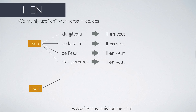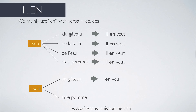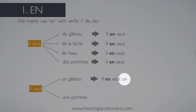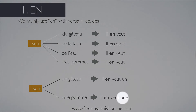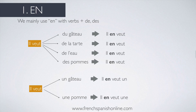It also works with indefinite articles. For example, il veut un gâteau (he wants a cake) or il veut une pomme. The first one becomes il en veut un — you need to add the indefinite article UN at the end because gâteau is masculine. For pomme, which is feminine, it becomes elle en veut une. So when you have some cake, some pie, some water, etc., just il en veut. But with an indefinite article, you need to add it at the end of the sentence.